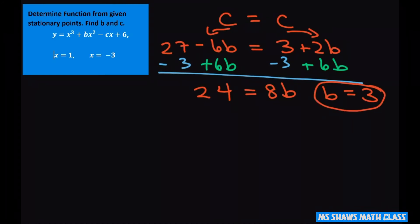And then we easily can find c by just using substitution and plugging this 3 into either this one or this one or both. So I'll just plug it into this one. And you get 3 plus 2 times 3, and that's going to give you 9.